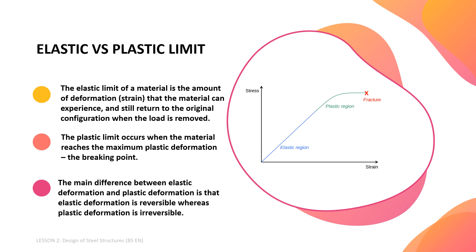The two parameters that determine the elasticity of a material are its elastic modulus and its elastic limit. The elastic limit is the amount of deformation or strain that the material can experience and still return to its original configuration when the load is removed. The plastic limit occurs when the material reaches maximum plastic deformation, the so-called breaking point. We can graph the relationship between stress and strain on a stress-strain diagram. For stress beyond the elastic limit, a material exhibits plastic behavior.